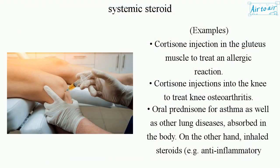Examples of systemic steroid use include cortisone injection in the gluteus muscle to treat an allergic reaction, cortisone injections into the knee to treat knee osteoarthritis, and oral prednisone for asthma as well as other lung diseases.